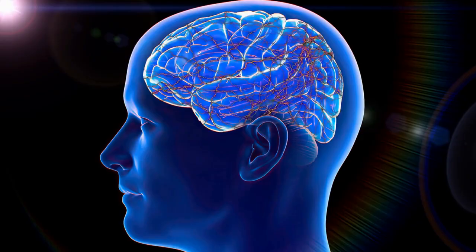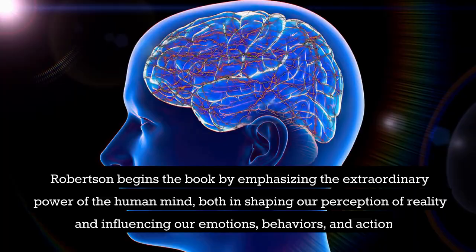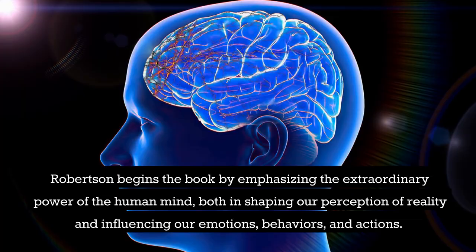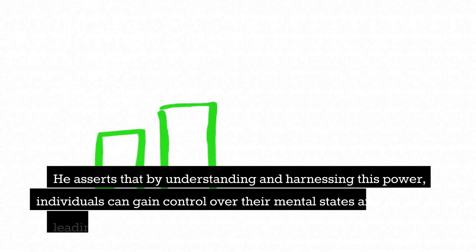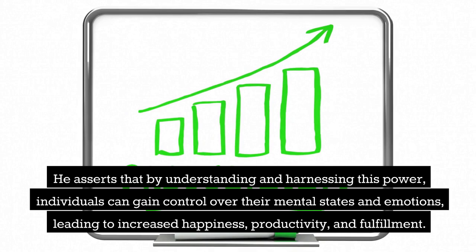Robertson begins the book by emphasizing the extraordinary power of the human mind, both in shaping our perception of reality and influencing our emotions, behaviors, and actions. He asserts that by understanding and harnessing this power, individuals can gain control over their mental states and emotions, leading to increased happiness, productivity, and fulfillment.